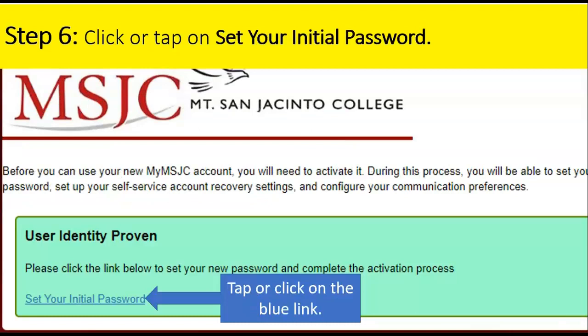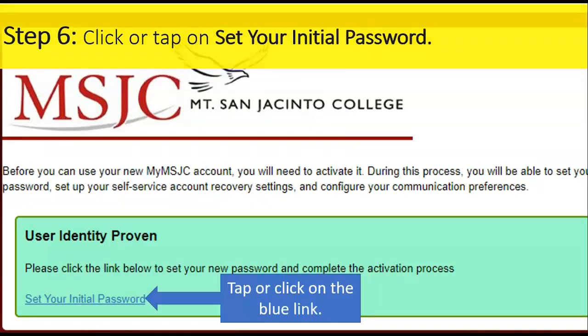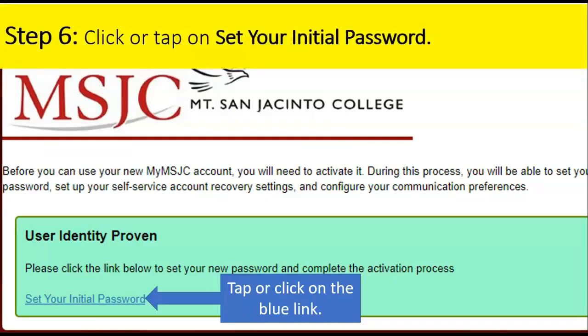Step 5: Click or tap on Continue. Step 6: Click or tap on Set Your Initial Password. That password from the email, you are going to change it — look for the blue link and tap or click on it.